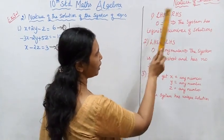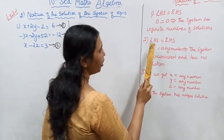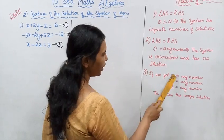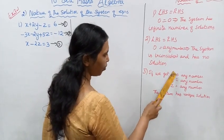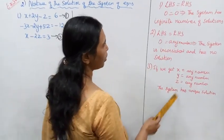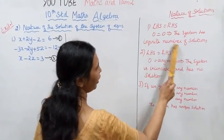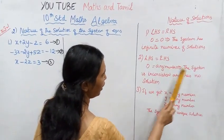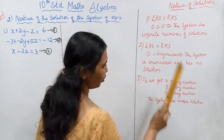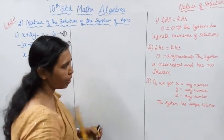Summary: left hand side equal to right hand side giving 0 equal to 0 means the system has infinite number of solutions. If 0 equals any number, the system is inconsistent and has no solution. If we get specific values for x, y, z, the system has a unique solution.